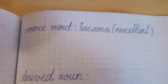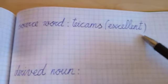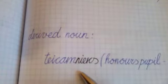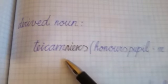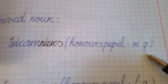Next source word, teitsams, excellent. Derived noun, teitsamnieks. Remove s and add nieks. It is teitsamnieks, honors pupil, male gender.